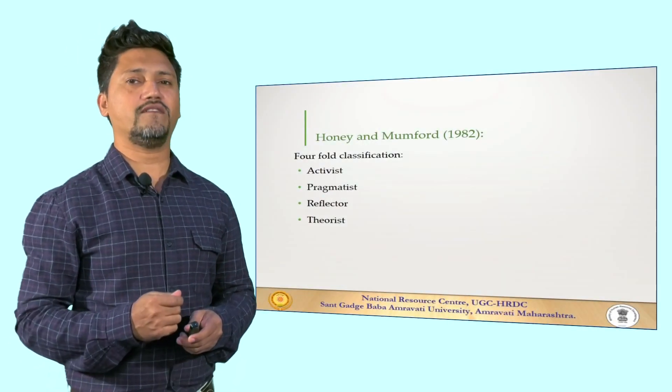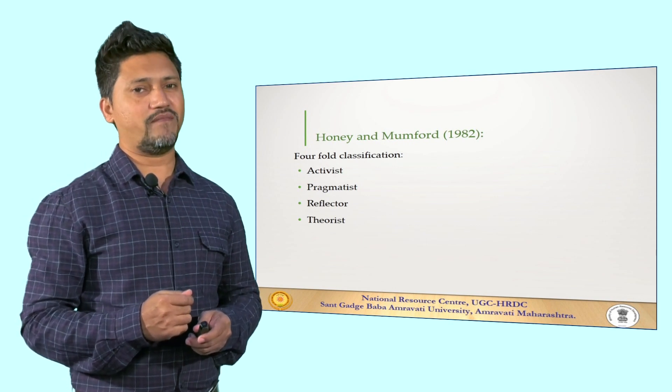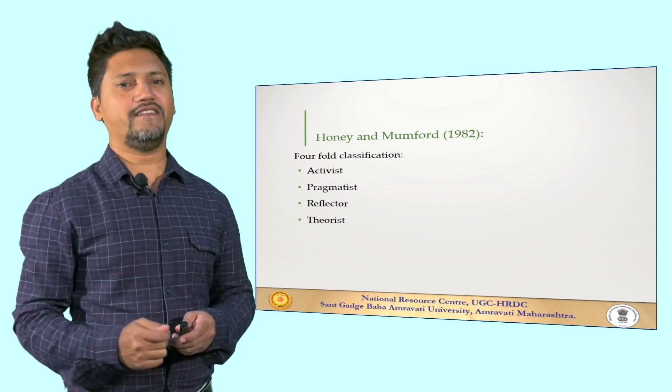After Pasch's style inventory, we have Honey and Mumford's. They have this four-fold classification of styles, namely activist, pragmatist, reflector, and theorist.